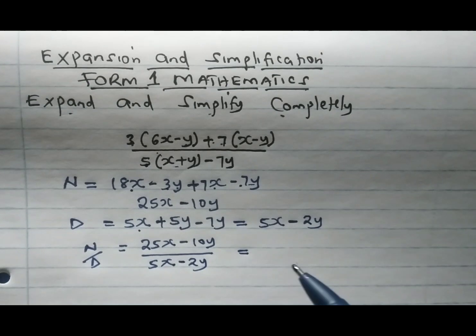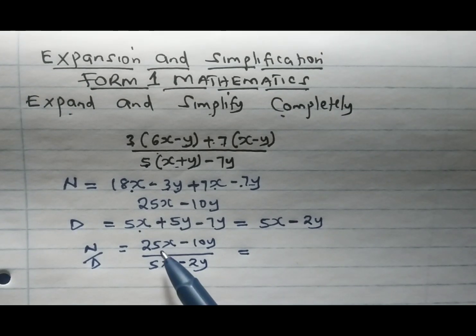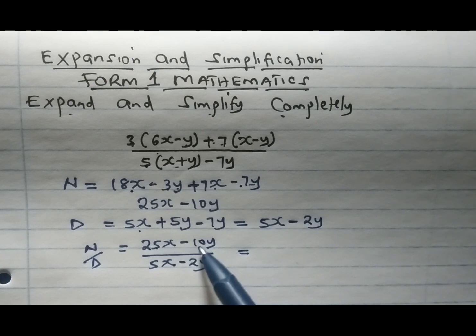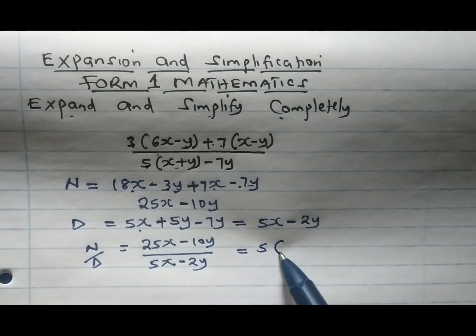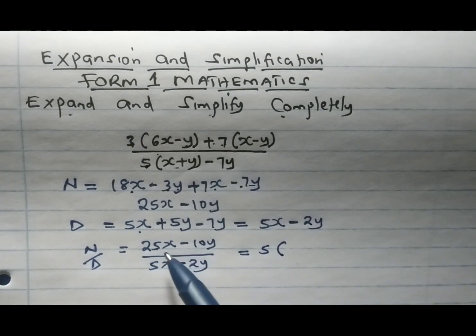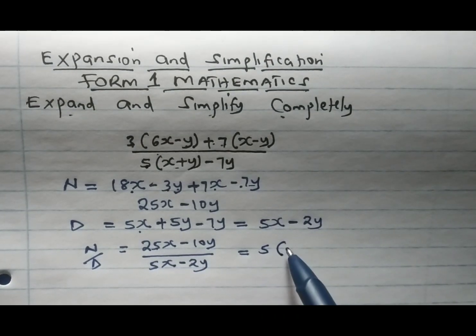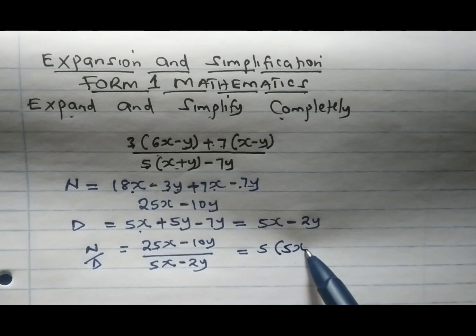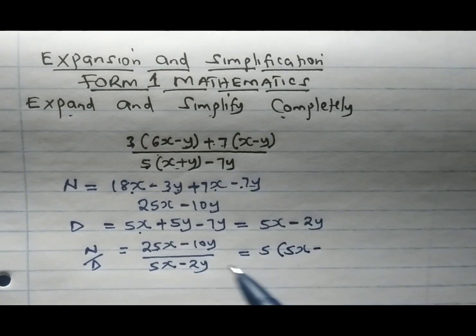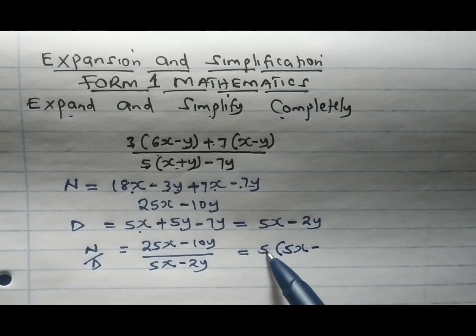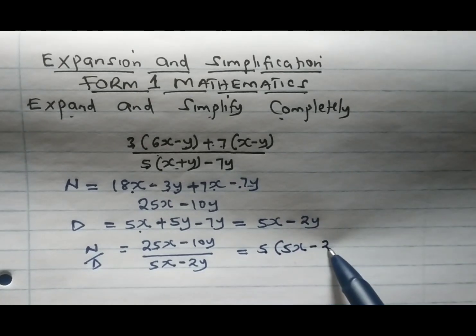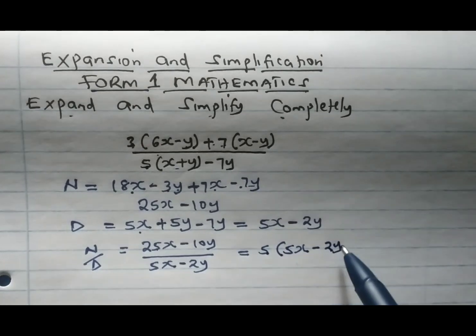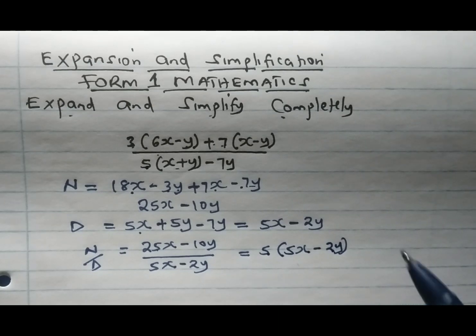We look at the numerator between 25 and minus 10. The common factor between 25 and 10 is 5. So we have 5 times 5x minus 2y, divided by 5x minus 2y.